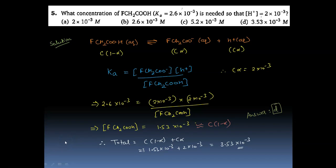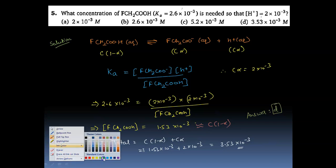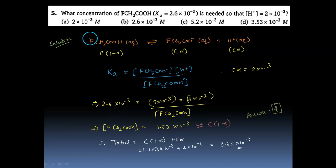Hello. In this question, let us talk about these ionic equilibrium advanced problems. Let's see question number five. It says: what concentration of FCH₂COOH, Ka given as 2.6×10⁻³, is needed so that H⁺ concentration is 2×10⁻³? So if we write the dissociation reaction for this fluoroacetic acid, we get this.